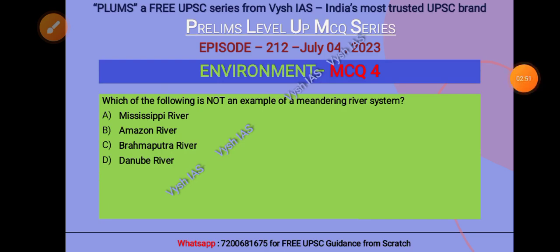The fourth question: which of the following is NOT an example of a meandering river system? Options are: A) Mississippi River, B) Amazon River, C) Brahmaputra River, D) Danube River. All these rivers are important, and you should be knowing the world map—it's very important.